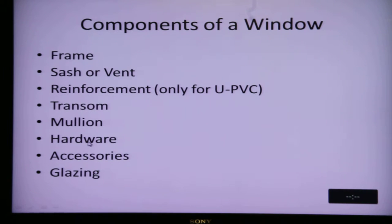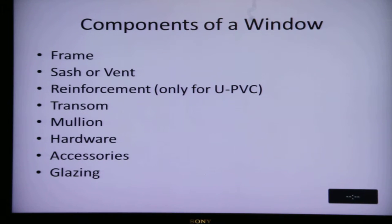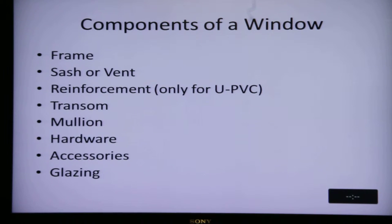Hardware includes locking points, locking strips, locks, and cylinders. Accessories include wool pile for sealing of sliding windows or EPDM gaskets — these are the accessories. And then there is the glazing of the glass in the window.